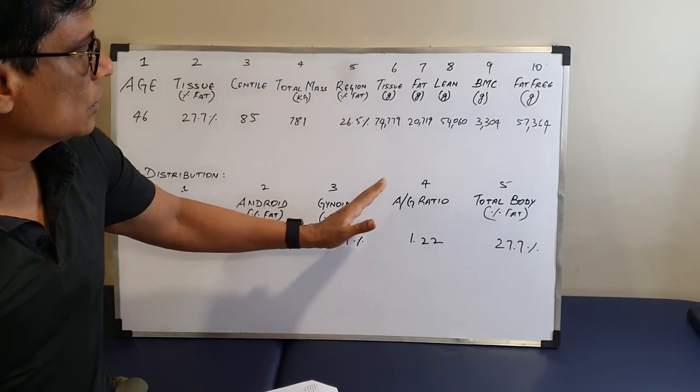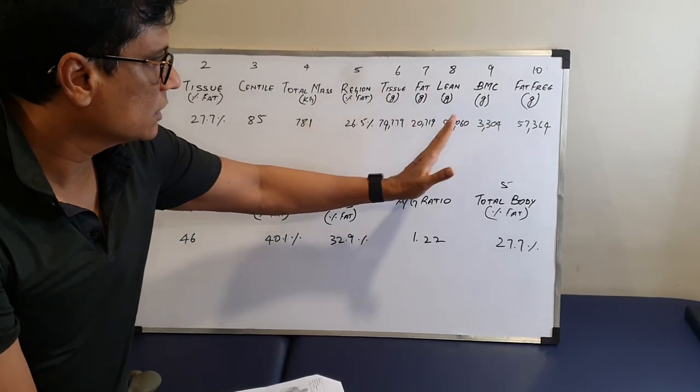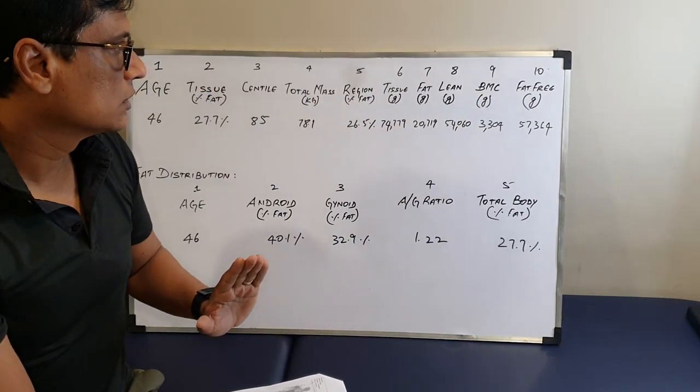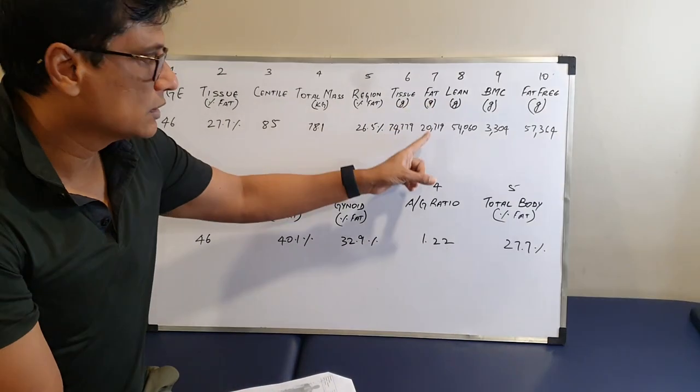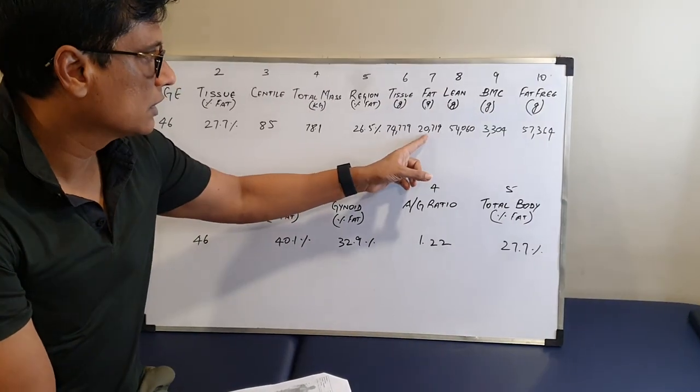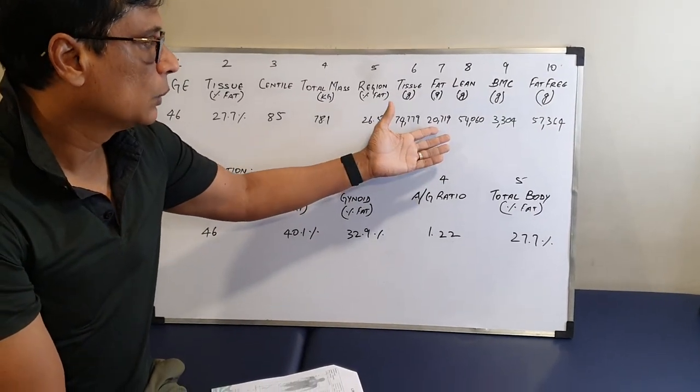Tissue is a combination of fat mass and lean body mass. Is that clear? Fat mass is nothing but the fat you have. In this case, this person has about 20 kgs.